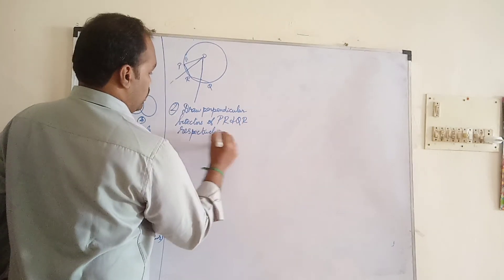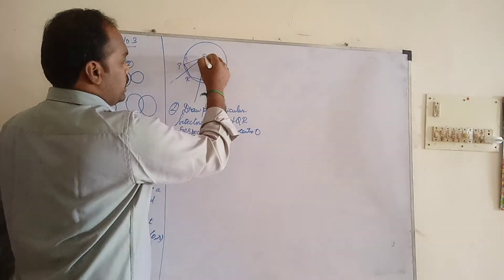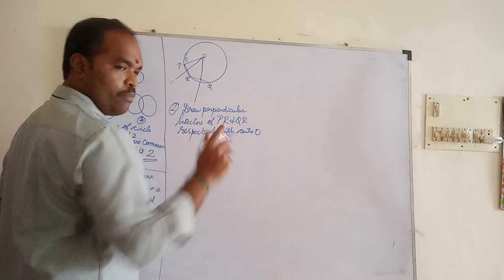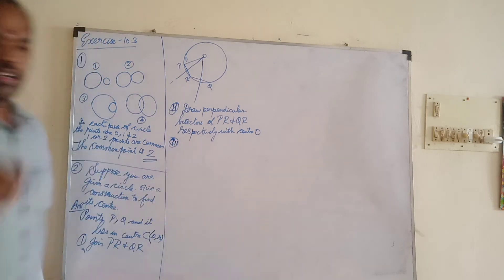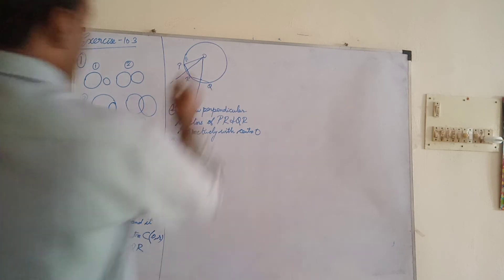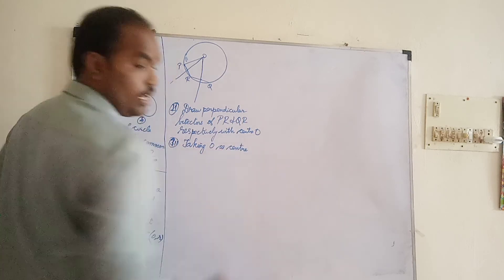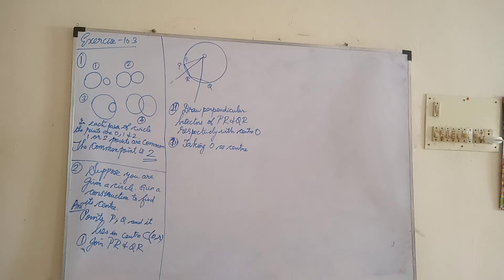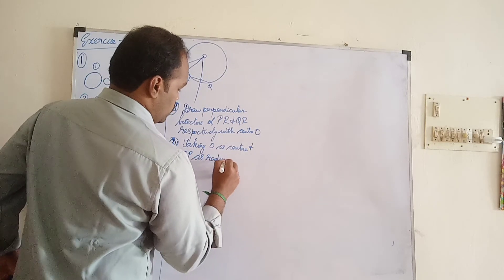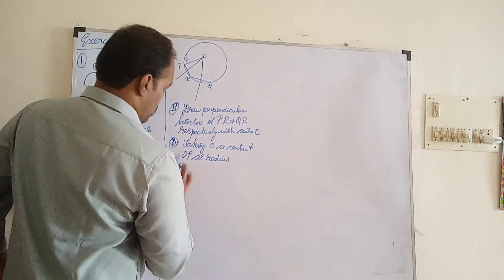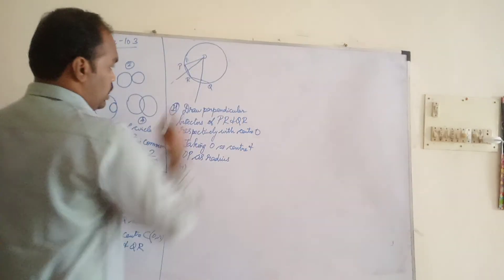With center O — we are drawing perpendicular by center O only. So the third point: taking O as center and OP as radius. The next fourth point — this is the required circle.